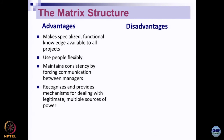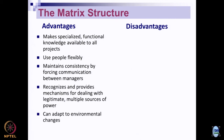Matrix structure also recognizes and provides a mechanism for dealing with legitimate multiple sources of power. Since people in the matrix organization have to report to multiple bosses and supervisors, they have to deal with different people with varying kinds of authority in a specific way. It can also adapt to environmental changes — since it is localized and specific to a project while connected to larger organizational functions, it has more flexibility to maneuver and respond to project or customer requirements.